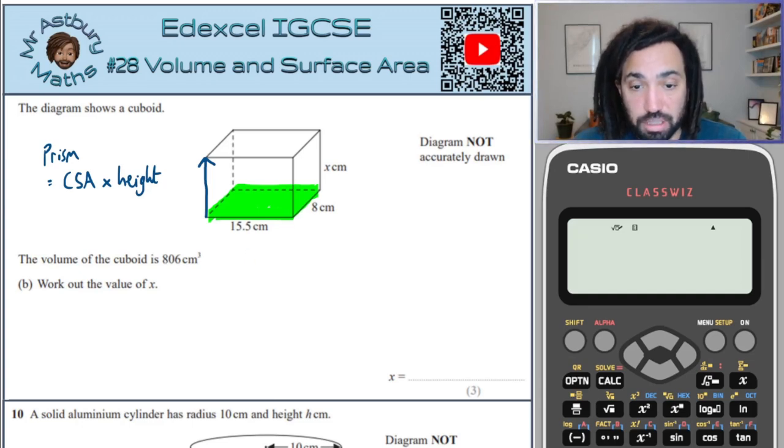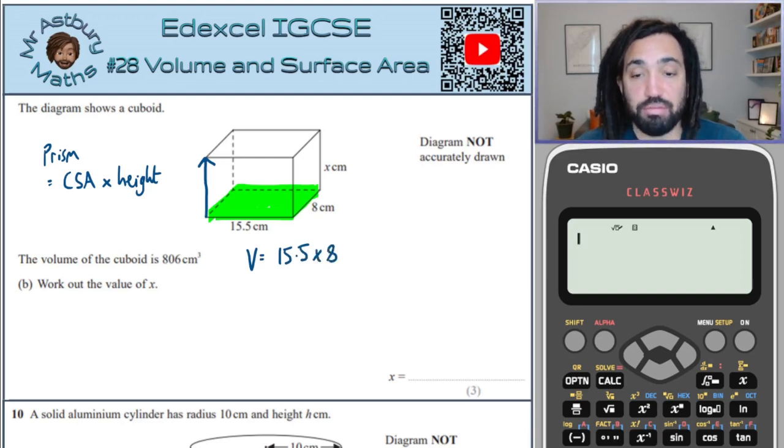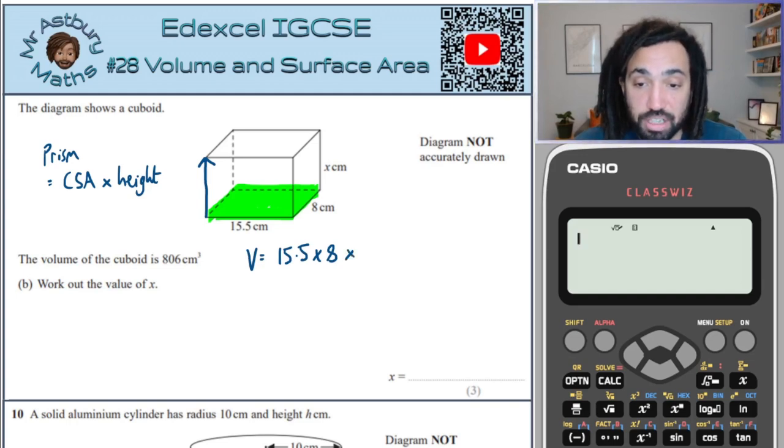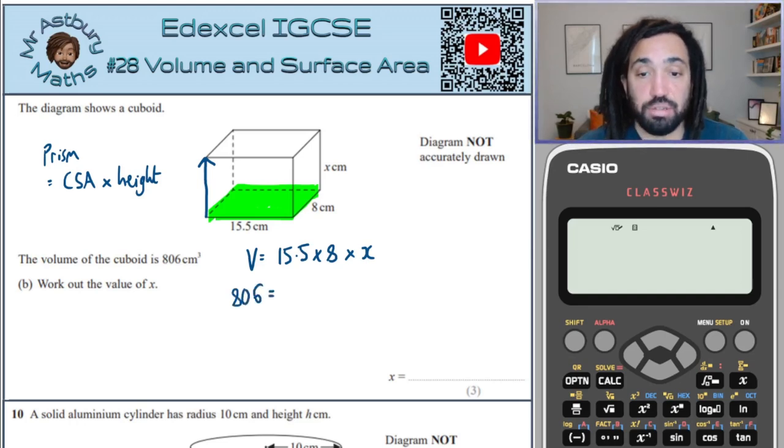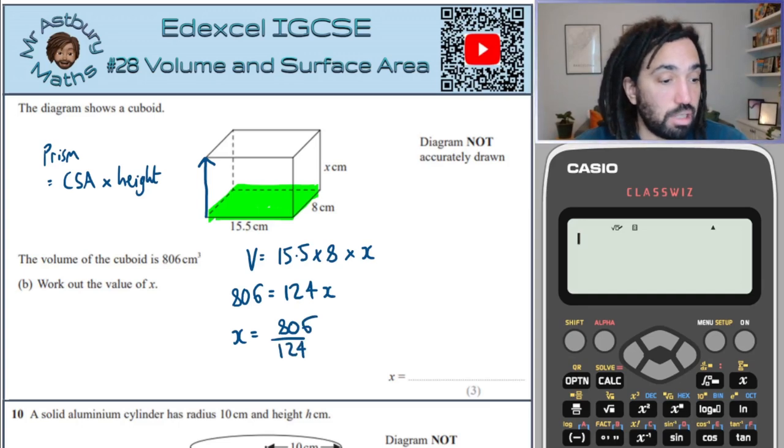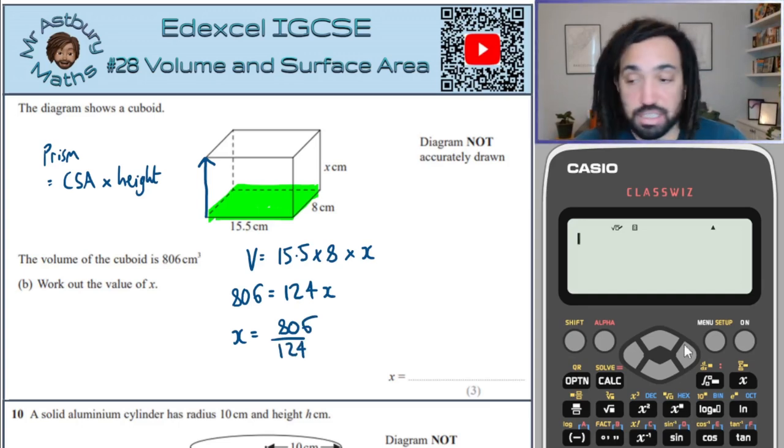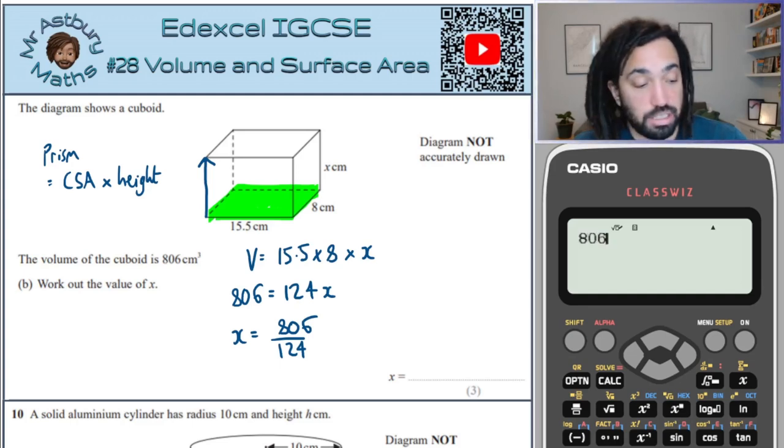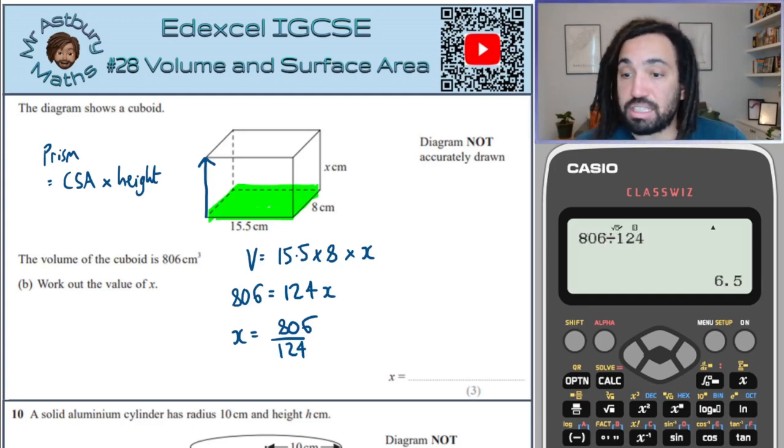So the volume, we know, is the cross-sectional area, which is, in this case, the base times by the width, or the length times by the width. And then we multiply it by that third dimension, which in this case is the height, which is x. So we get 806 is equal to, and 15 times 8 is 120 plus 4, so it's 124, and then times by x. So in order to find x, we just need to divide both sides by 124. So x is equal to, let's just use a calculator for this, 806 divided by 124.